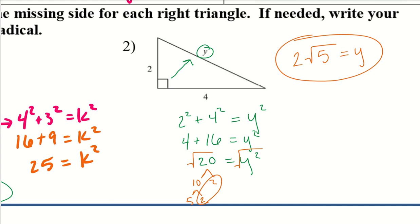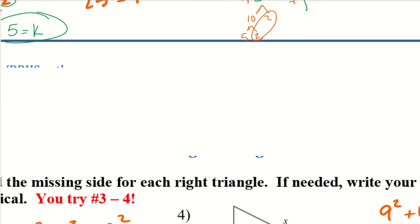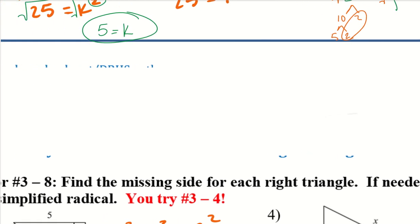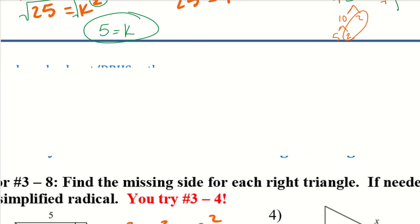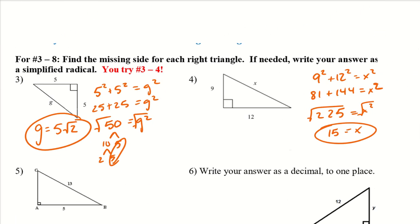Go ahead and try numbers 3 and 4 — pause the video and try those two problems. For number 3, we have to simplify a radical. For number 4, 225 is a perfect square, so the answer is 15.